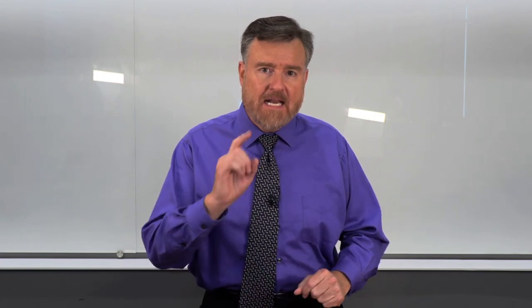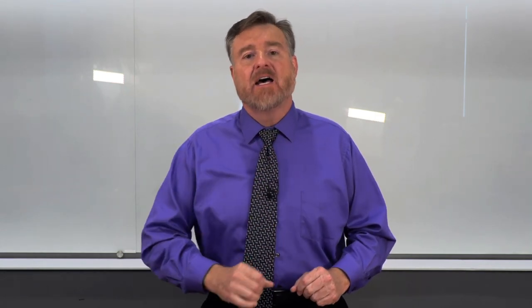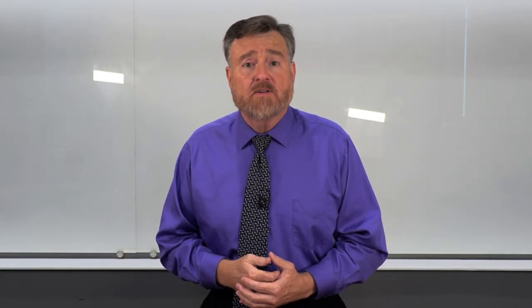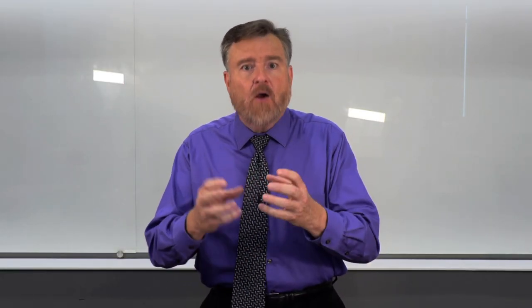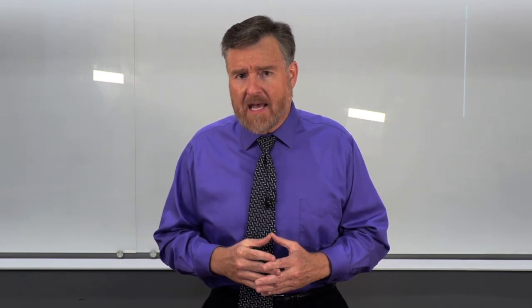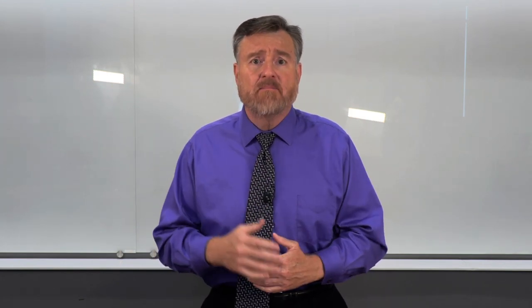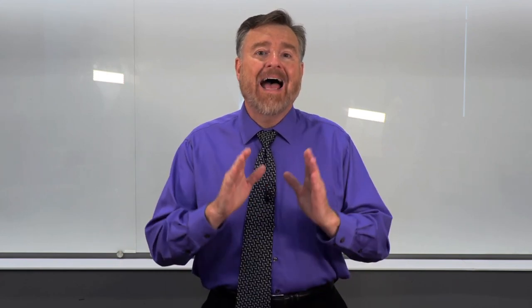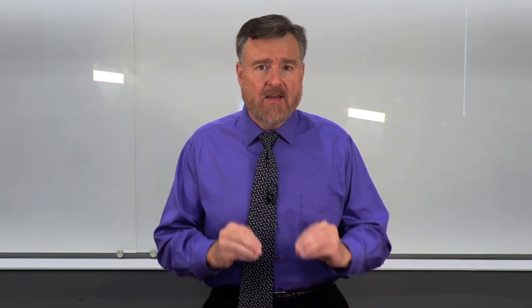First, most important, number one, is that our graphs should display our data honestly. We want to reveal what the data actually show. We don't predetermine the outcome that we want to see and then cherry-pick the data and present it in a specific way that leads us to this outcome that we wish were true. We want to let the data speak for themselves and show what the data actually reveal in their totality.